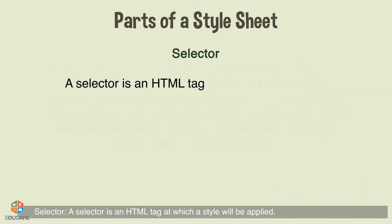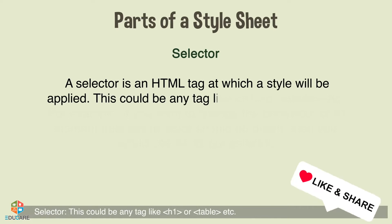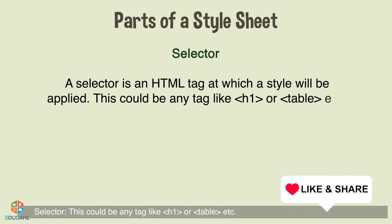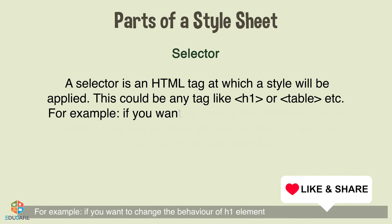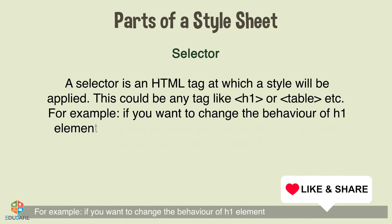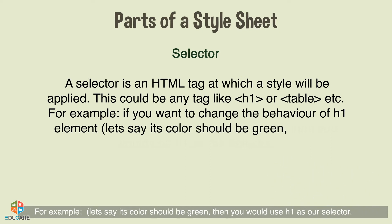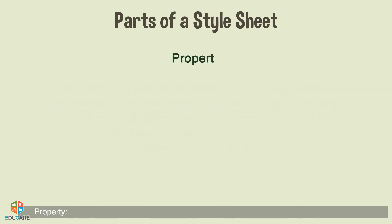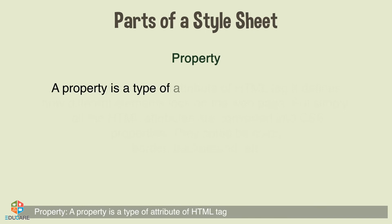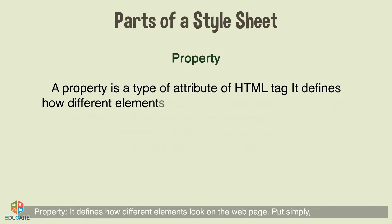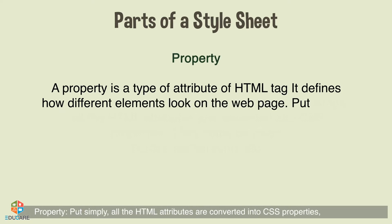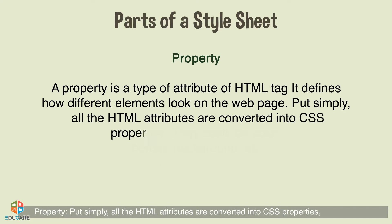A style rule is made of a selector and a declaration. A selector is an HTML tag at which a style will be applied — this could be any tag like h1 or table, etc. For example, if you want to change the behavior of the h1 element, say its color should be green, you would use h1 as a selector. A property is a type of attribute of an HTML tag; it defines how different elements look on the web page.